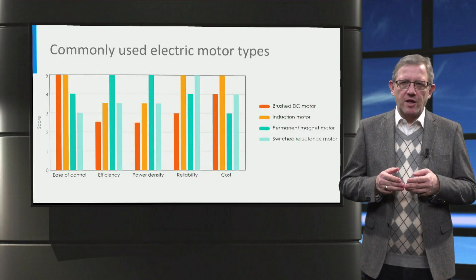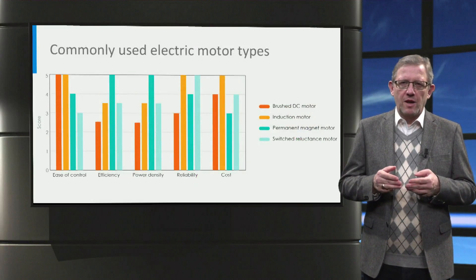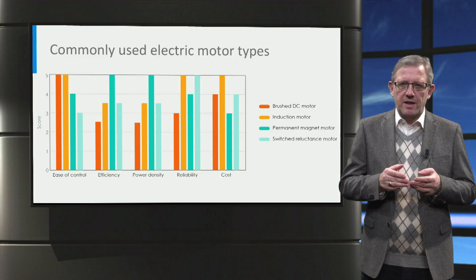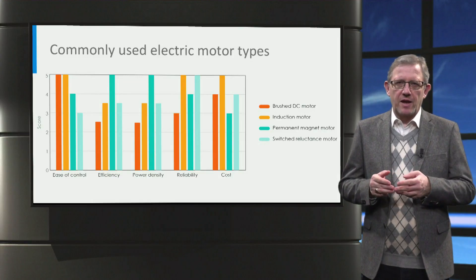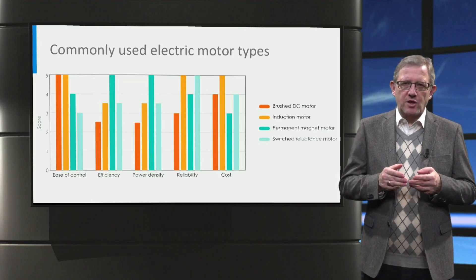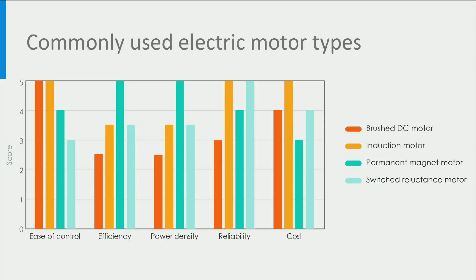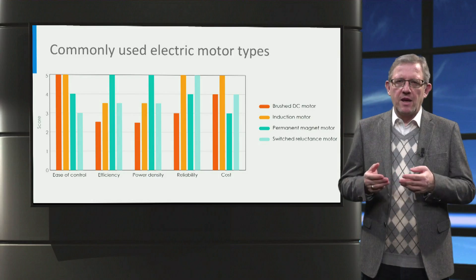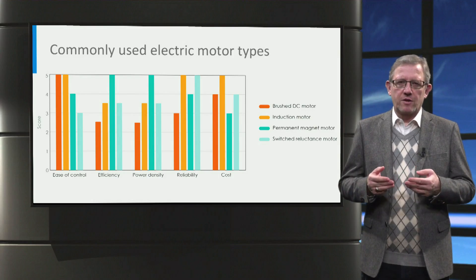Four types of electric machines have been used in both plug-in hybrid electric vehicles and battery electric vehicles to date, namely brushed DC motor, induction motor, permanent magnet motor and switched reluctance motor. It can generally be concluded that induction motors and permanent magnet motors are the most popular when considering various parameters such as control, efficiency, power density, reliability and cost.